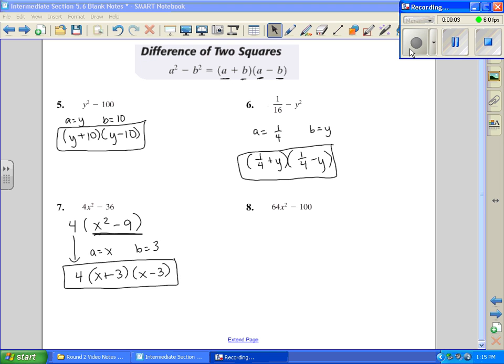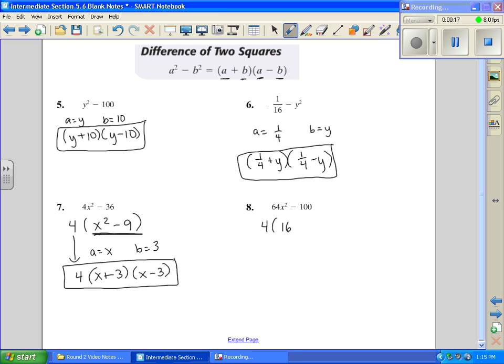Okay, we're going to pick back up at problem number 8, and we're factoring. Our first step is always, always take out a GCF first if possible. In this one, we can factor out a 4. 64 divided by 4 is 16.